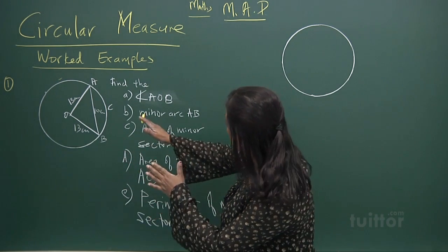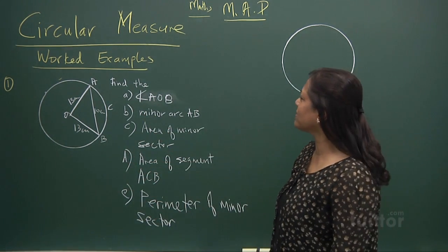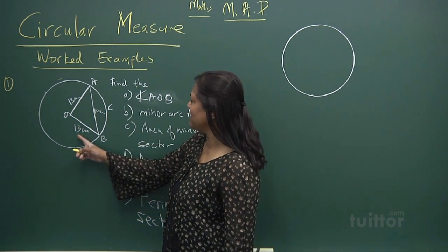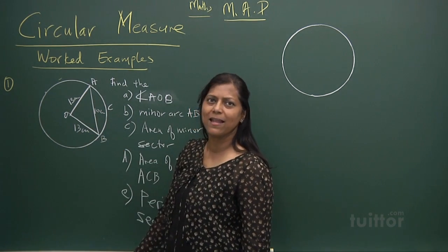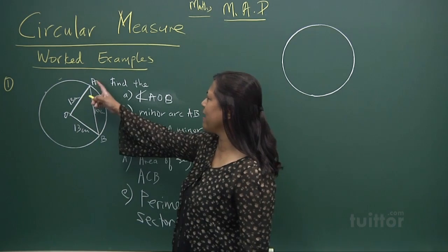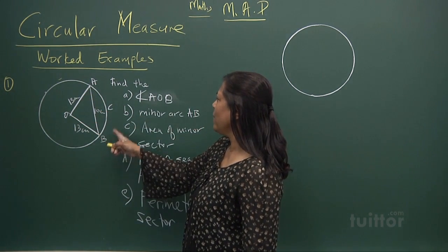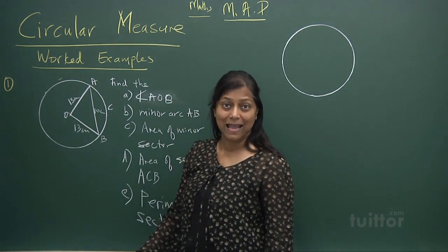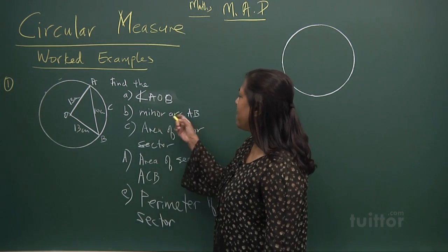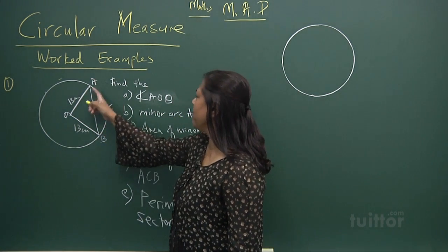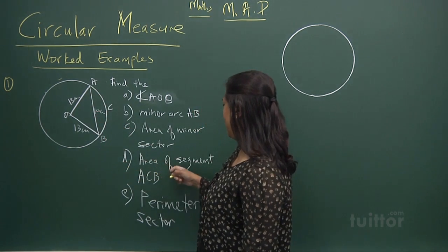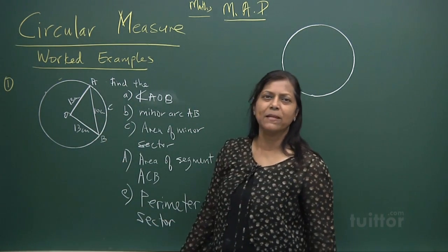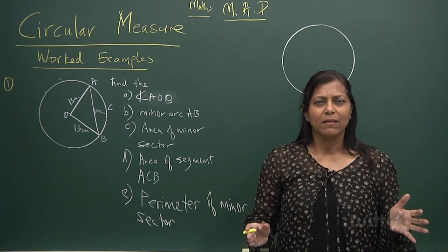Now let's get back and focus. We've got this circle and the radius is 13 cm. The length of the chord is 10 cm. They want you to find: the angle AOB — take it as a minor angle; if it were reflex they would specify — the minor arc AB, the area of the minor sector, the area of the minor segment ACB, and the perimeter of this sector.